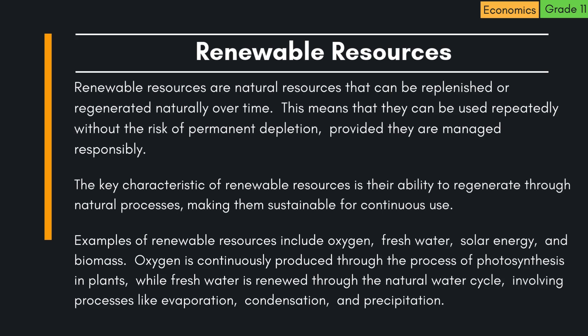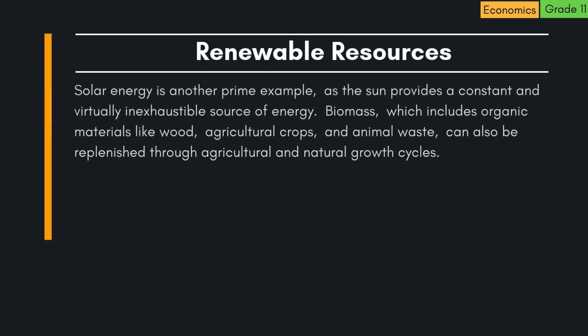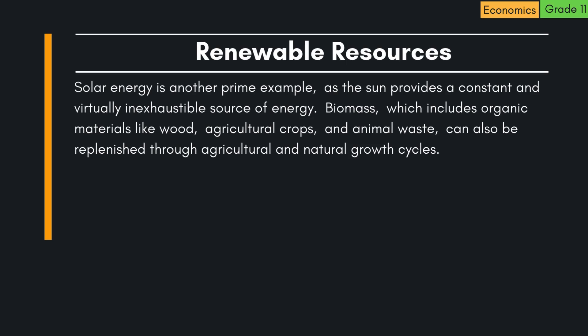Oxygen is continuously produced through the process of photosynthesis in plants, while fresh water is renewed through the natural water cycle, involving processes like evaporation, condensation, and precipitation. Solar energy is another prime example, as the sun provides a constant and virtually inexhaustible source of energy. Biomass, which includes organic materials like wood, agricultural crops, and animal waste, can also be replenished through agricultural and natural growth cycles.